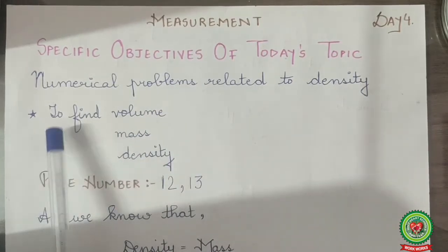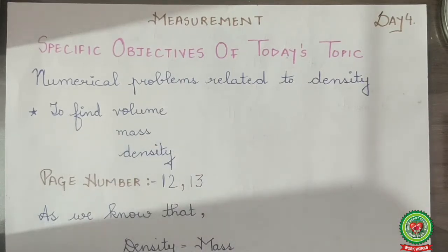That is to find volume, mass and density. So open page number 12 of your physics books.